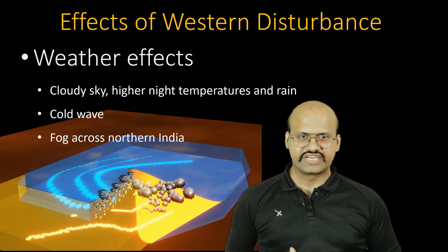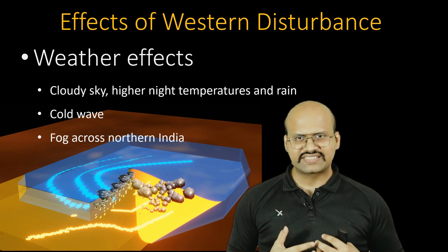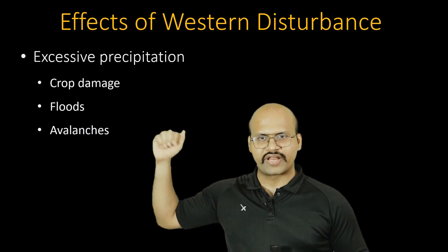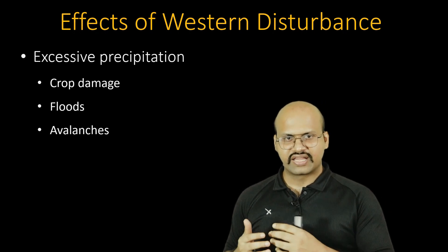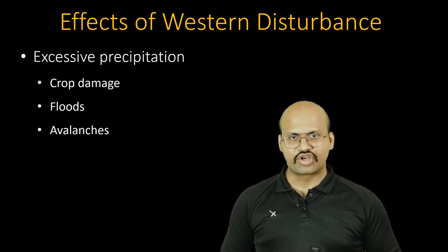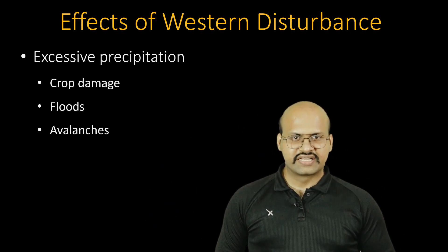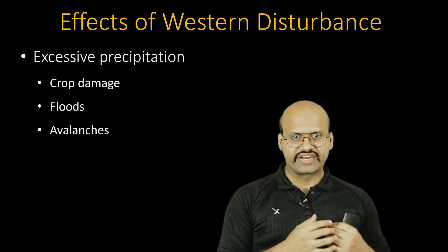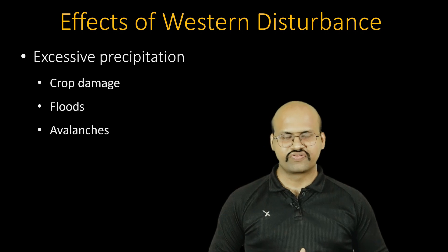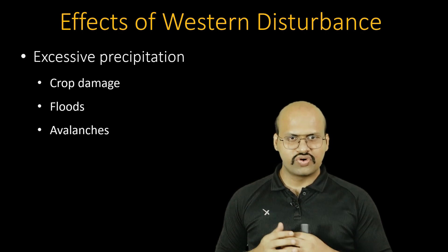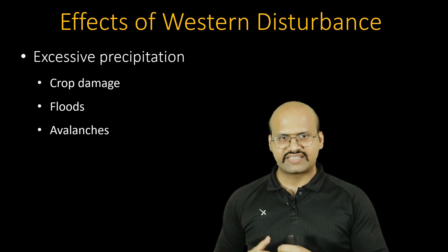Fog also increases due to the decrease in temperature. If there is excessive precipitation, it can damage rabi crops and cause flooding — some attribute the Ladakh and Uttarakhand floods to western disturbances. Avalanches are also triggered when rainfall in colder regions converts to snow, causing heavy snowfall. So western disturbances have positives in supporting rabi crops, but bring significant negatives when precipitation is excessive.